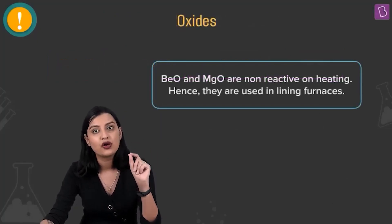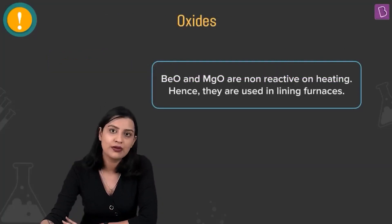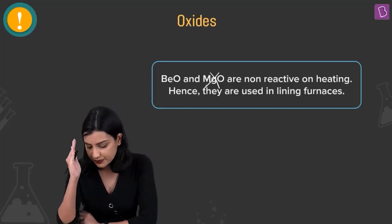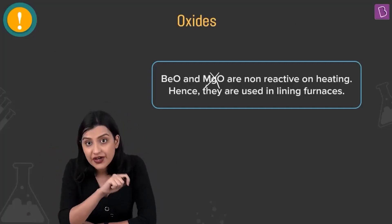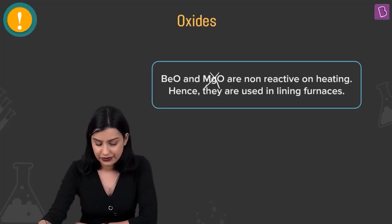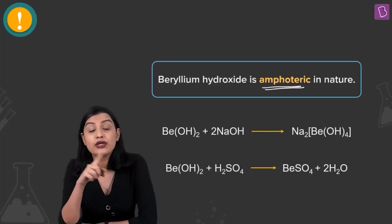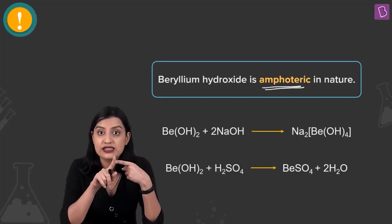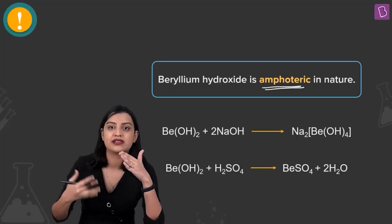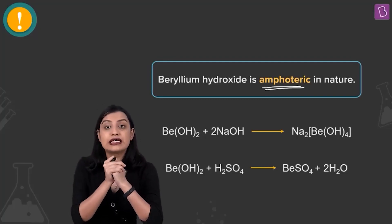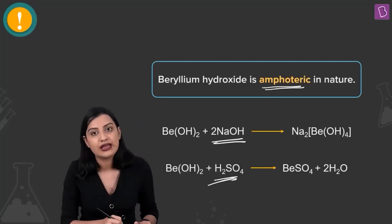The formed oxide becomes inert on heating, which is the case with beryllium oxide. Beryllium oxide becomes non-reactive on heating — that's why it's used for the inner lining of furnaces. Also, beryllium hydroxide is amphoteric in nature. As we go down the group, hydroxides become progressively more basic, but beryllium hydroxide reacts with both acids and bases.